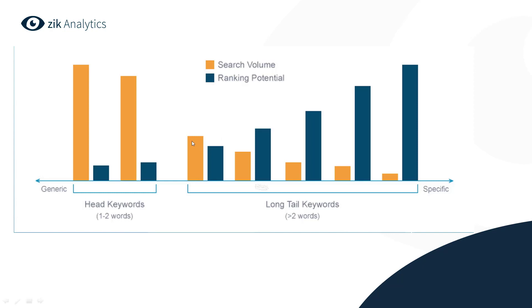Looking at the search volume for long tail keywords, it's very low when you use more words in your title, but the ranking potential is super high. So when looking at long tail keywords, this graph tells you that there isn't a lot of search volume — but remember, long tail keywords are our success.